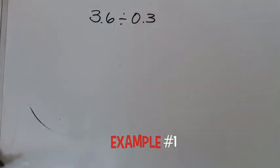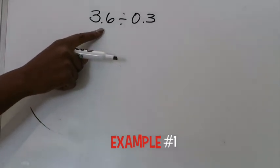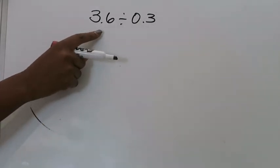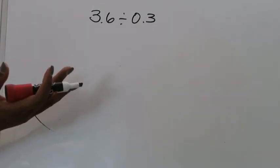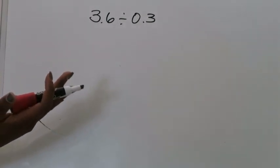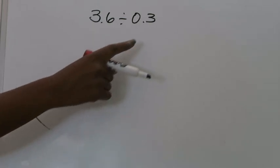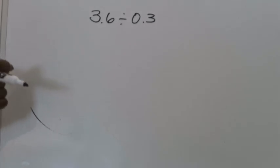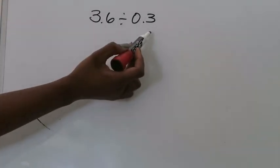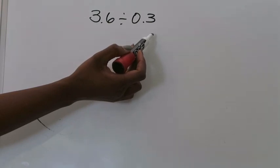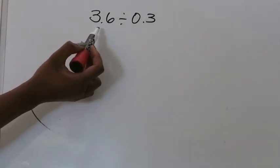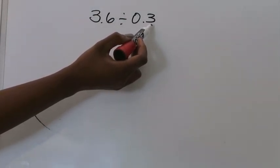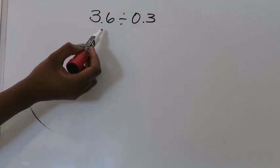In this example we are dividing three and six tenths by three tenths. What this is telling you is that you have three and six tenths of something — it could be ribbon or wood — and you're trying to figure out how many groups of three tenths you can create. The first thing that's most helpful is to look at your divisor, recognize what place value position it goes up to, and that will help you know how to model your dividend.